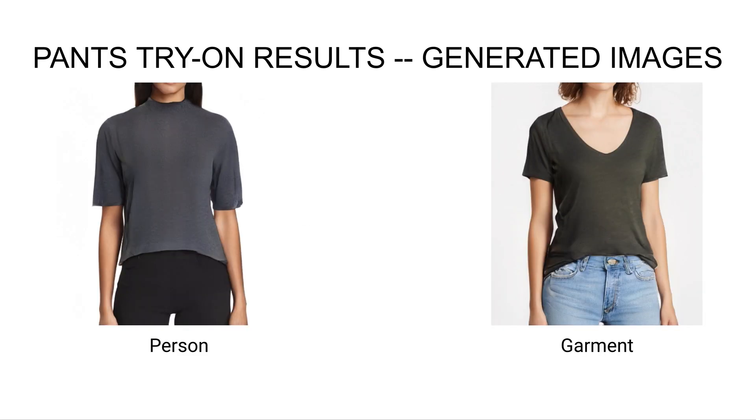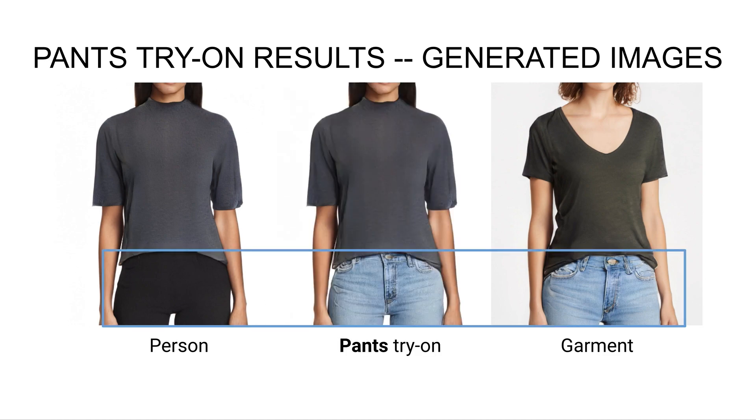So our focus was on shirt tryon, but we can easily change the garment that we transfer, just by changing the label that we give the optimization. So we don't have to retrain. Here we want to transfer the jeans from the right to the left person. And we show we're able to synthesize pockets, zippers, buttons, even though they didn't exist in the person image, all without changing the shirt or the identity of the person.